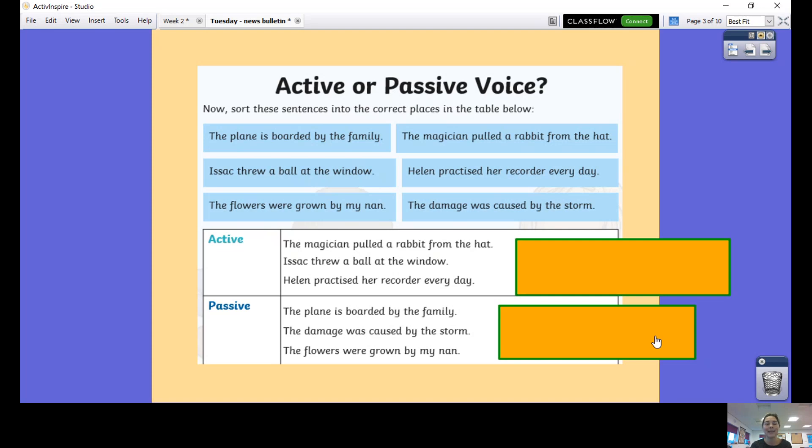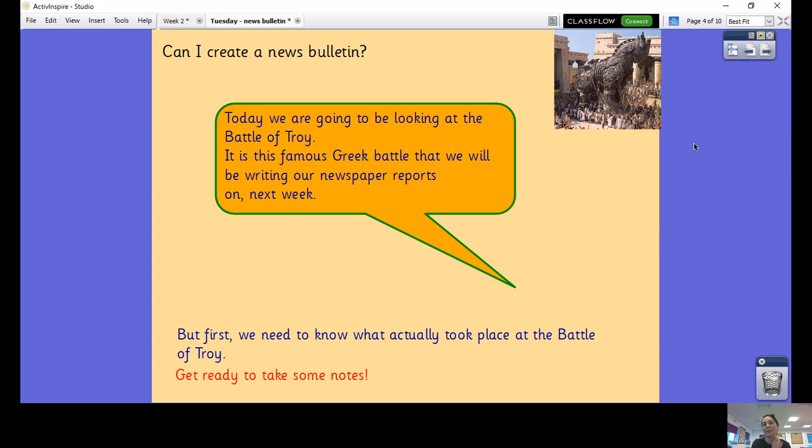Today we are going to be thinking about creating a short news bulletin. We're going to be looking at the Battle of Troy. Now this is a famous Greek battle that we will be writing our newspaper reports on next week. First of all we need to know what actually took place at this battle in order to be able to write a newspaper article about it. What you're going to need to do now is make sure you've got your pencil and your piece of paper.